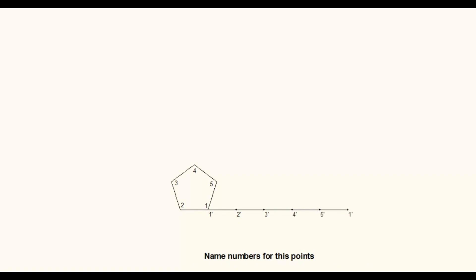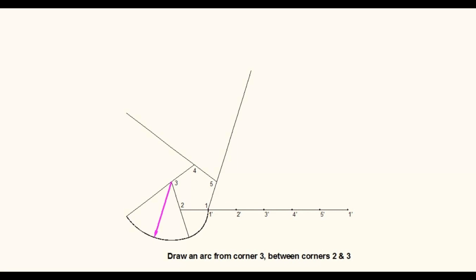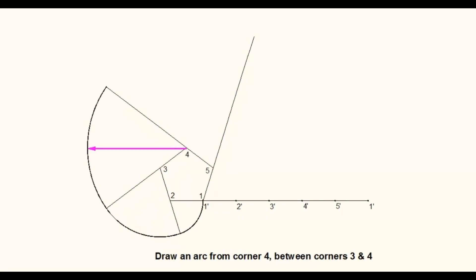Extend each side of the pentagon. Measure the distance of 1-dash to 2-dash on the horizontal line. With corner point 2 as center, draw an arc between edges 1 and 2. Measure the distance of 1-dash to 3-dash on the horizontal line. With corner point 3 as center, draw an arc between edges 2 and 3. Measure the distance of 1-dash to 4-dash on the horizontal line. With corner point 4 as center, draw an arc between edges 3 and 4.